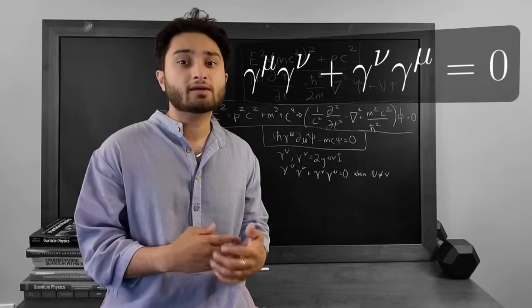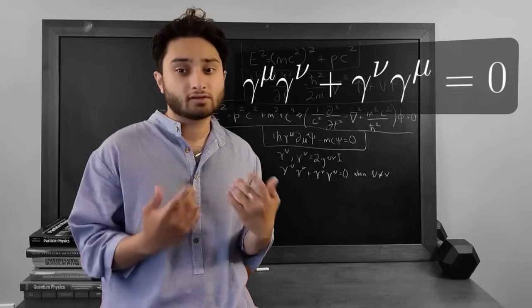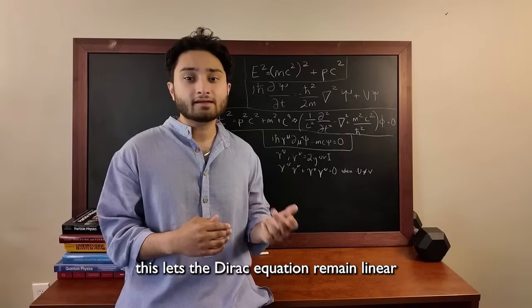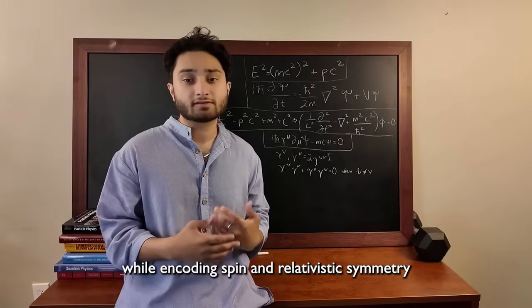gamma nu plus gamma nu, gamma mu equals zero for mu not equal to nu. This lets the Dirac equation remain linear while encoding spin and relativistic symmetry.